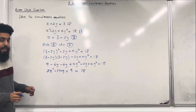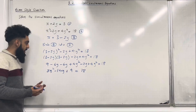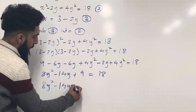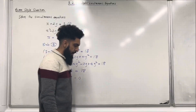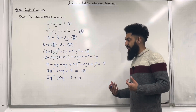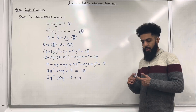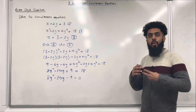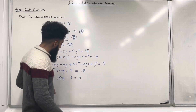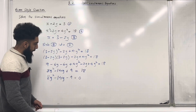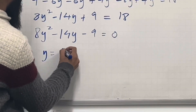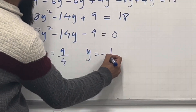Now we can take the 18 to the left-hand side, giving 8y squared minus 14y minus 9 equals 0. We have a quadratic equation, which we can solve by factorization, completing the square, or using the quadratic formula. Solving this equation gives y equals 9/4 and y equals minus 1/2.